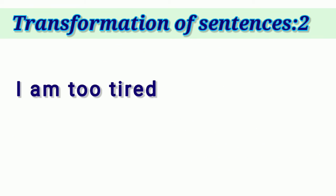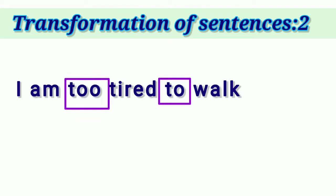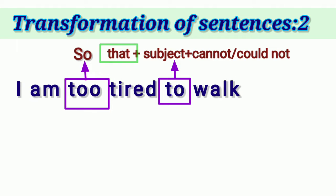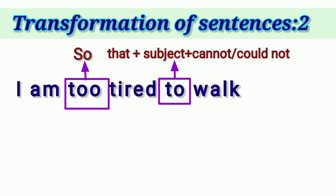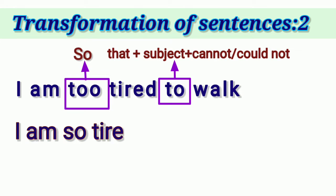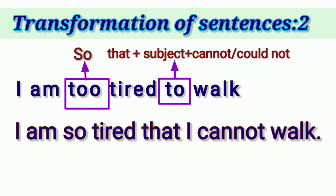Let's look at examples of removing TOO. The first sentence is: 'I am too tired to walk.' It means 'I am so tired that I cannot walk.' If the sentence is affirmative, it does not contain anything negative — we are changing it to negative. We have to remove both TOOs: TOO² and TO². TOO² is replaced by 'so' and TO² (the infinitive 'to walk') is replaced by 'that + subject + cannot.'